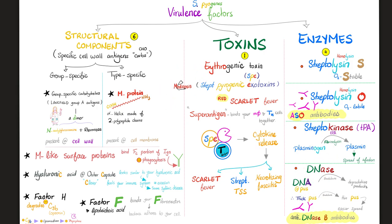DNase breaks down DNA — including DNA in the nuclei inside your neutrophils, your pus cells. When DNase breaks this up, thick pus is converted into thin pus, which is a lesser barrier and facilitates spread of infection. Your body will make antibodies against DNase B, called anti-DNase B antibodies. If this anti-DNase B antibody titer is elevated in your blood, it probably means you're suffering from a Streptococcus pyogenes infection.